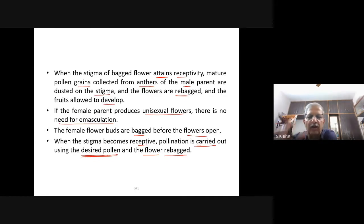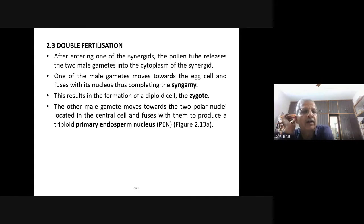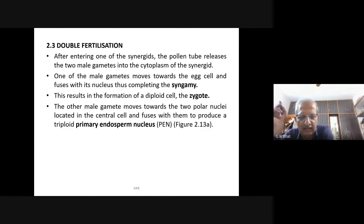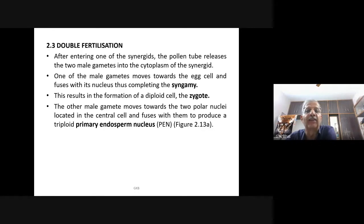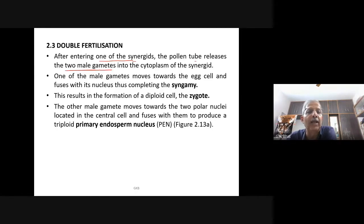Now, double fertilization — always asked in examinations for four marks, requiring a diagram. There are two male gametes that enter through the pollen tube and pass through the synergies. After entering one of the synergies, the pollen tube releases two male gametes into the cytoplasm of the synergies. One of the male gametes moves towards the egg cell and fuses with its nucleus, completing syngamy — forming a diploid zygote.